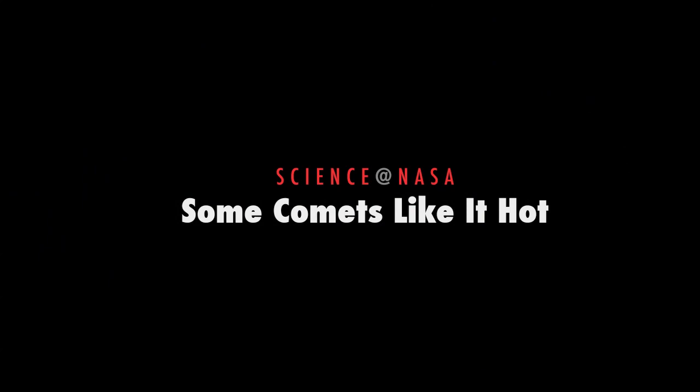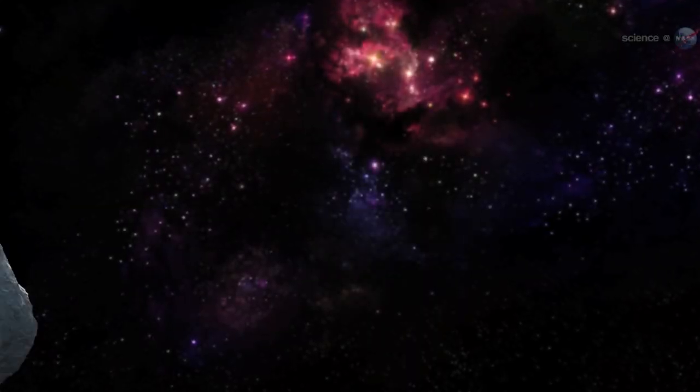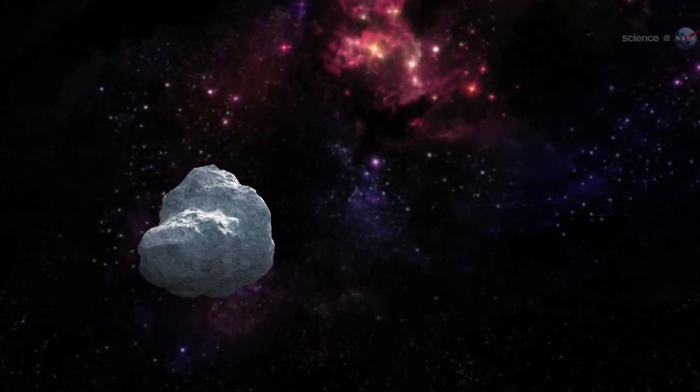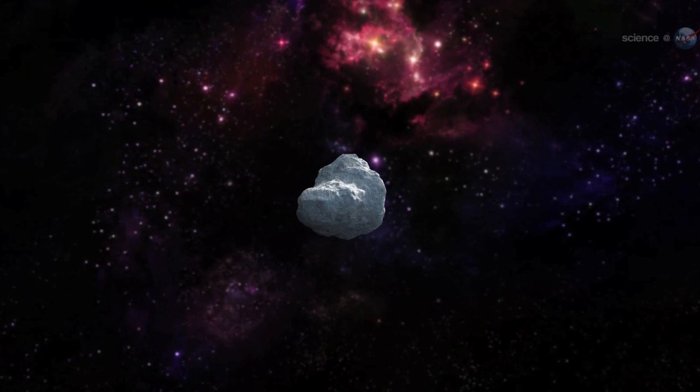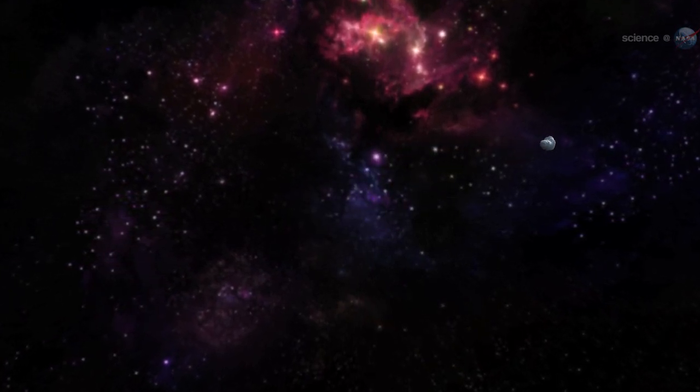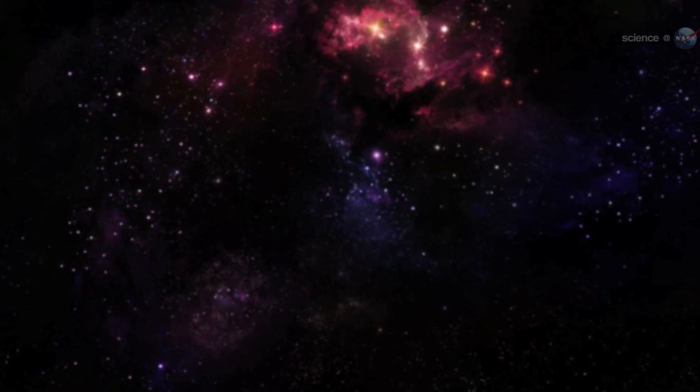Some Comets Like It Hot, presented by Science at NASA. Comets are icy and fragile. They spend most of their time orbiting through the dark outskirts of the solar system, safe from the withering depredations of intense sunlight. Their natural habitat is the deepest cold.